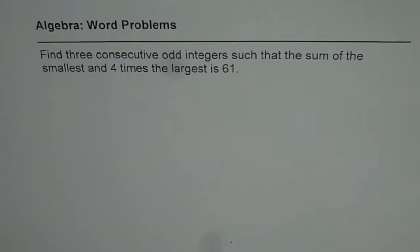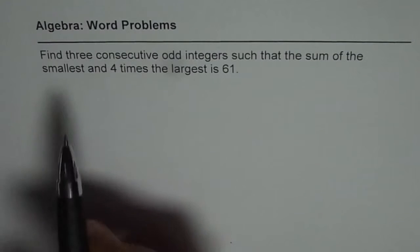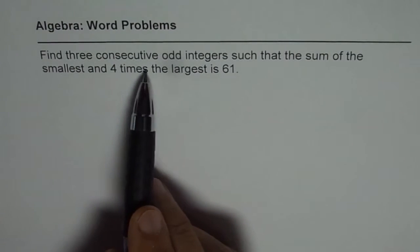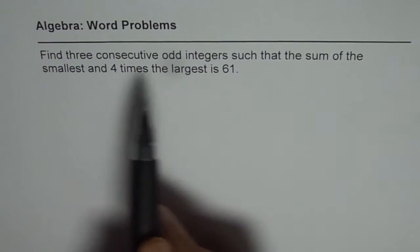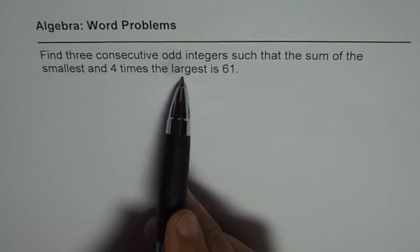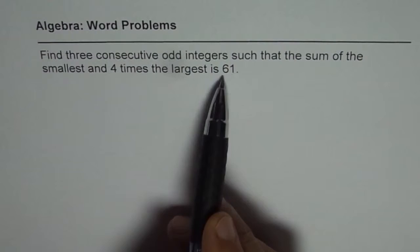I'm Anil Kumar and here is another question on consecutive integers. The question is: find three consecutive odd integers such that the sum of the smallest and 4 times the largest is 61.